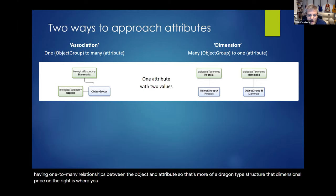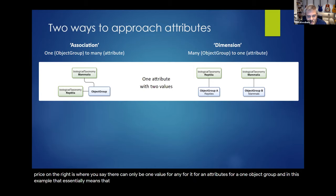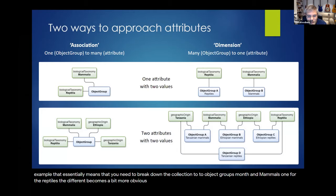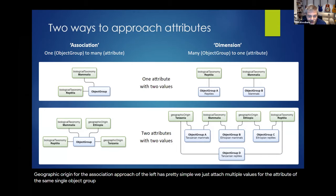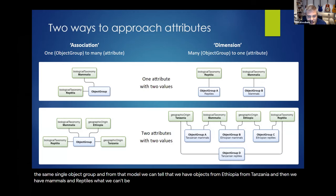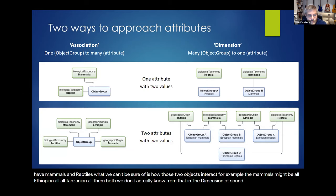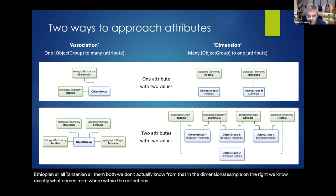The fact that an object group represents a number of objects and can therefore be subdivided into smaller groups gives us two options for handling those relationships within the CD model — currently calling those options either treating the attribute as an association or as a dimension, though the terms might be subject to change. The association approach is having one-to-many relationships between the object group and the attribute — more of a tagging type structure. The dimensional approach is where you say there can only be one value for an attribute for any one object group, which essentially means you need to break down the collection into two object groups — one for the mammals, one for the reptiles. The difference becomes more obvious when we apply two different attributes: biological taxonomy and geographic origin.